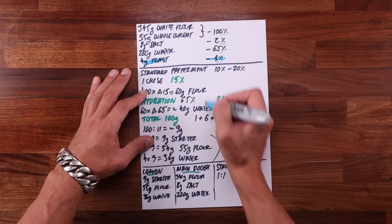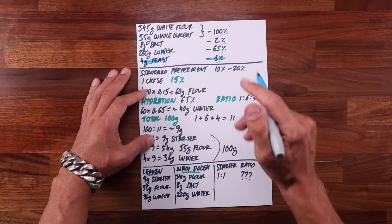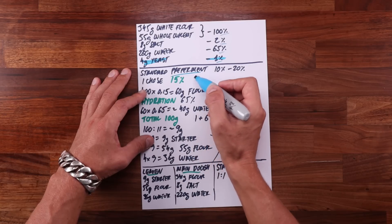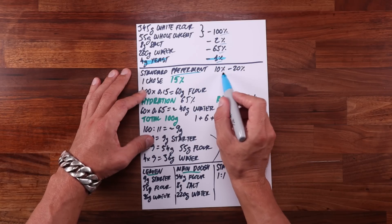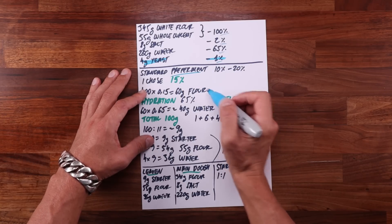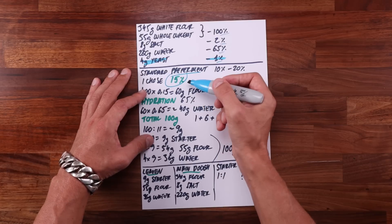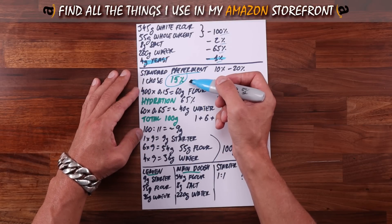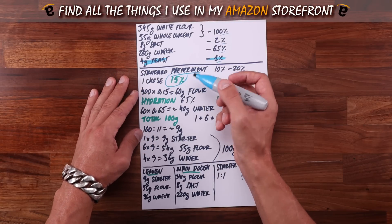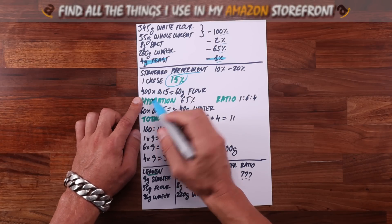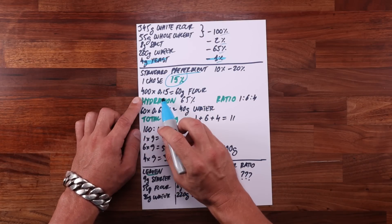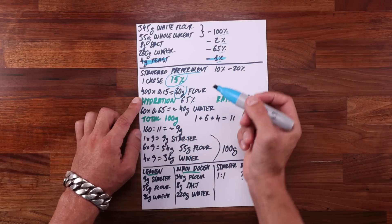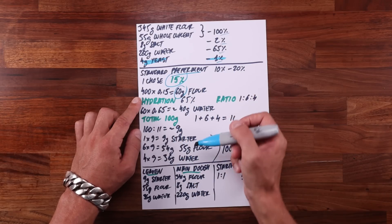The first step of converting a recipe is figuring out how much of the flour we want to pre-ferment. A standard range is about 10 to 20% of the total flour in the recipe. I chose 15% for this example. To find out how much 15% is in grams we multiply the total amount of flour by 0.15. There's 400 grams in total. 15% of 400 grams is 60 grams of flour. And that's the amount of flour in our preferment.